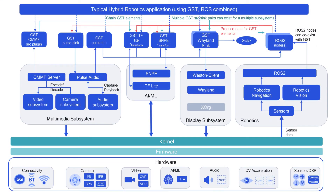The use of these plugins facilitates chaining multiple components together, thus allowing a clean abstraction between multiple behaviors. For example, the output of a source element can easily be consumed by a ROS node, and the ROS nodes can produce data for other GStreamer sink elements. These ROS nodes can also act as consumers for other user-defined topics.